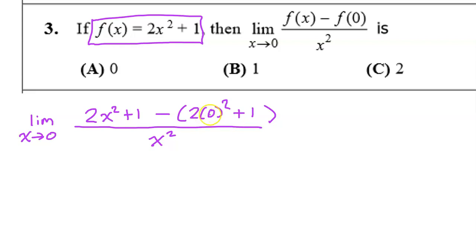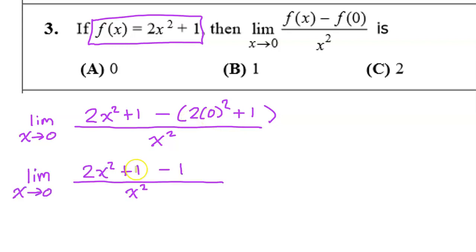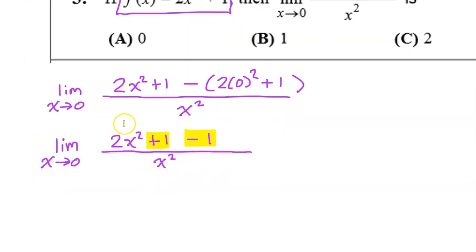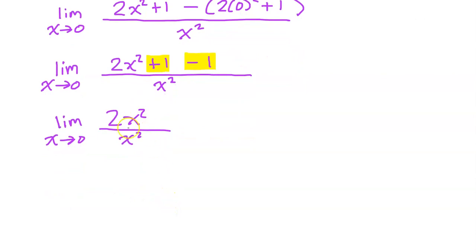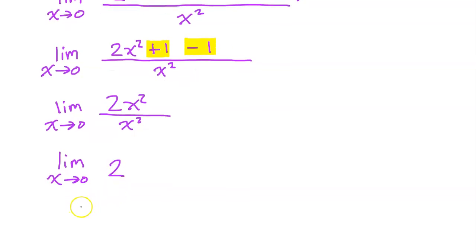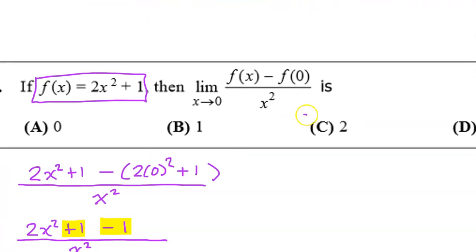Let's simplify: 0 squared is 0, 2 times 0 is 0, so f(0) is just 1. We have a positive 1 and a negative 1 that cancel each other out. So now we have the limit as x approaches 0 of 2x squared over x squared. The x squareds cancel, leaving the limit as x approaches 0 of 2, which is a constant. So the limit is just 2. The answer is C.